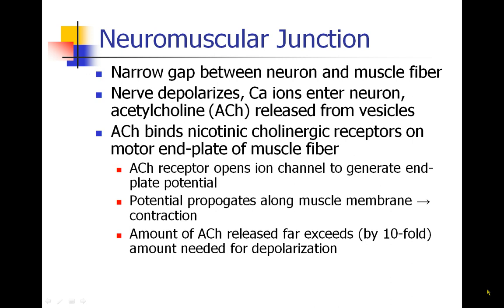When acetylcholine binds to the receptor, it opens up an ion channel and generates what's called an end plate potential, so the charge continues in the muscle fiber. This potential propagates along the muscle membrane, causing the muscle to contract. The amount of acetylcholine you need is only a fraction of the amount that's actually released — probably about 10 times as much acetylcholine is released as you actually need in order to achieve depolarization.